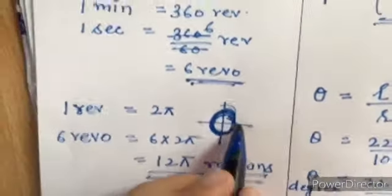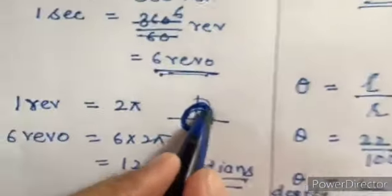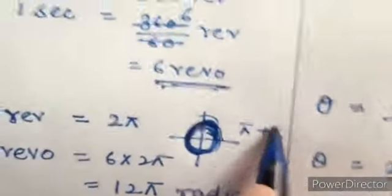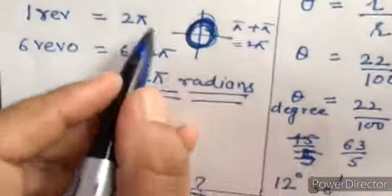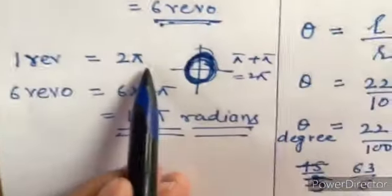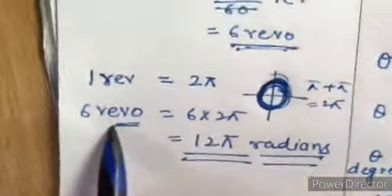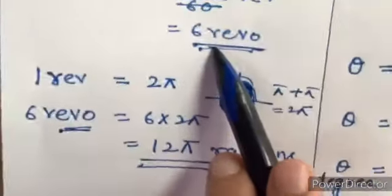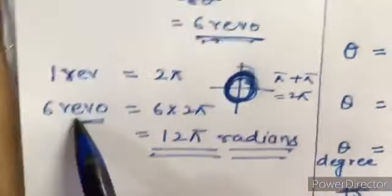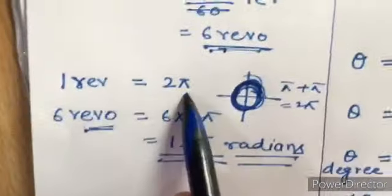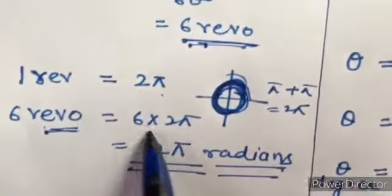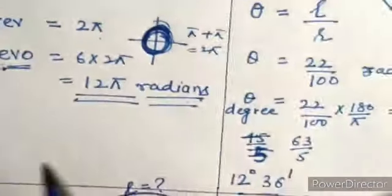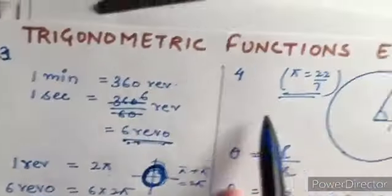One complete revolution is equal to 2π radians. So 6 revolutions per second is equal to 6 times 2π, that is 12π radians. Now question number four.